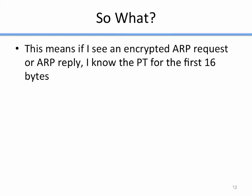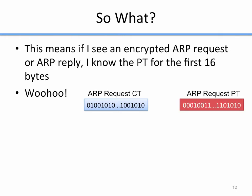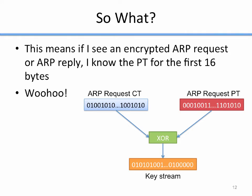What's the significance of the predictable 16-byte header? If I see an encrypted ARP request or reply, I know the plaintext for the first 16 bytes, because it's predictable — just because it's an ARP request on this network, I can know what those first 16 bytes would be. So if I take the ARP ciphertext I sniffed and XOR it with the predicted ARP plaintext, I get keystream — 16 bytes of keystream for every ARP request I sniff. Every ARP request that comes across the network, I can grab it, predict the plaintext, and derive the keystream.